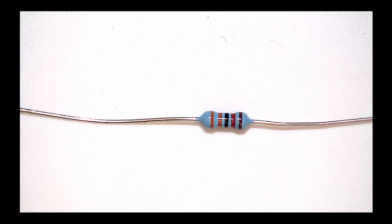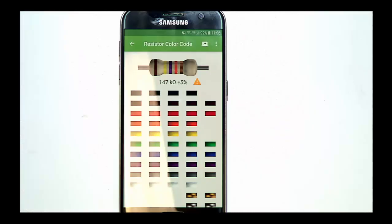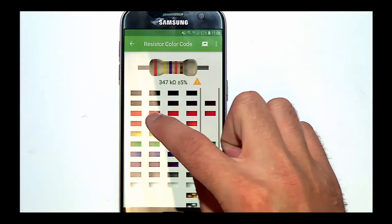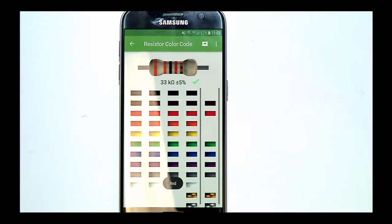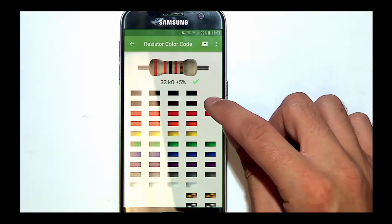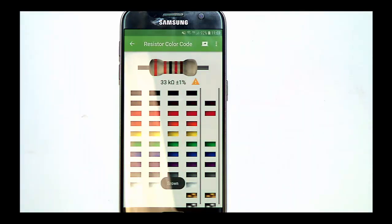This is a 5-band resistor. So the first three colours represent significant figures. In this case, orange, orange and black. The fourth band is the multiplier, in this case red. So we multiply by 100. Putting this into the app, orange, orange, black, red, shows that we have a resistor with a value of 33 kilo ohms. The tolerance band was brown, which gives a tolerance of 1%.